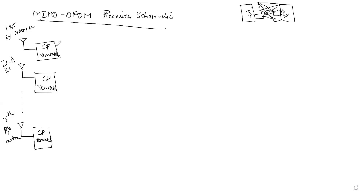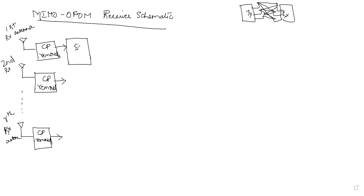Once the CP is removed, the next step is converting the incoming serial data to parallel. So there will be a serial-to-parallel converter.